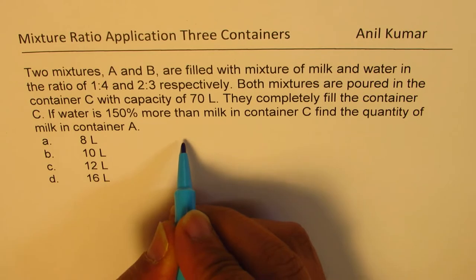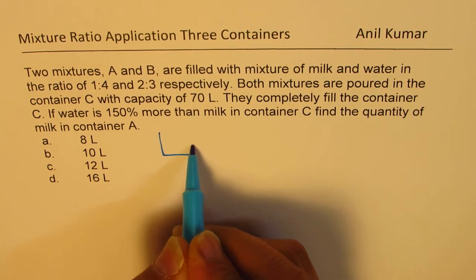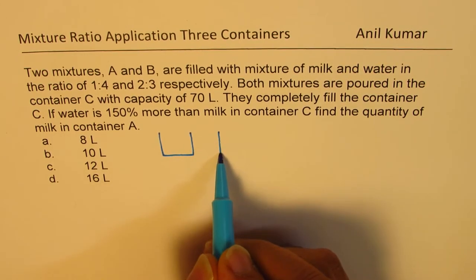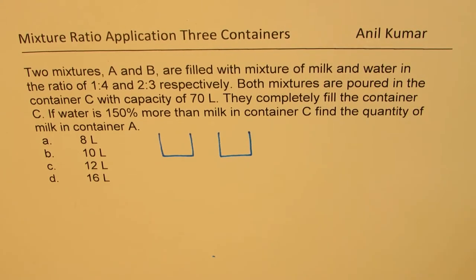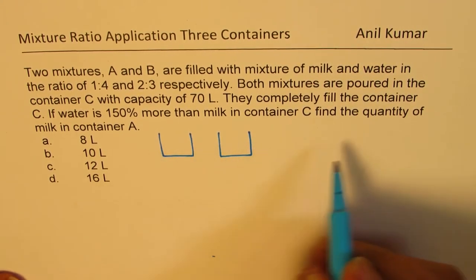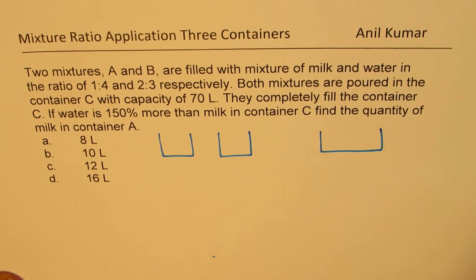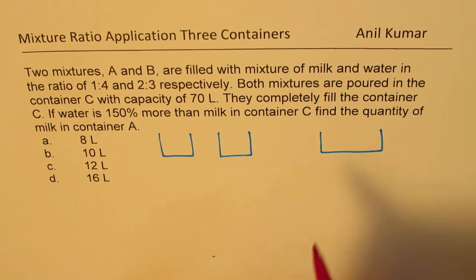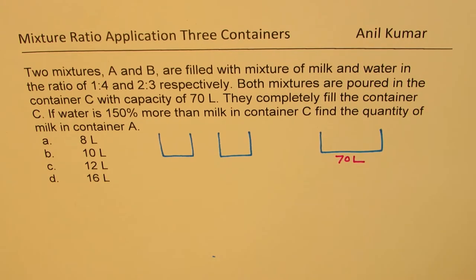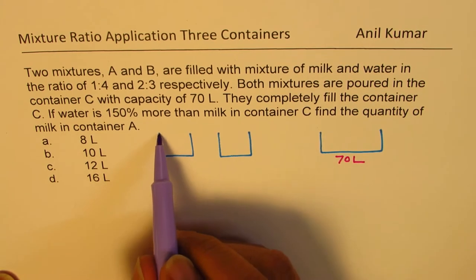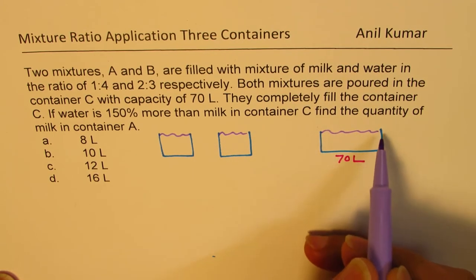So the situation here is kind of like this. We have two containers whose capacity we don't know. So these are the two containers which we don't know much about. But what we know is that once their liquid is filled into the third container, which is much bigger, having a capacity of 70 liters, then the whole liquid really tops up.